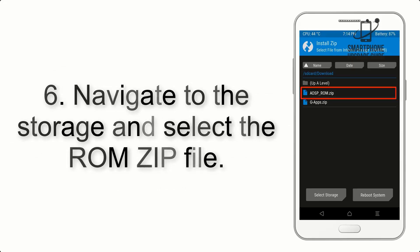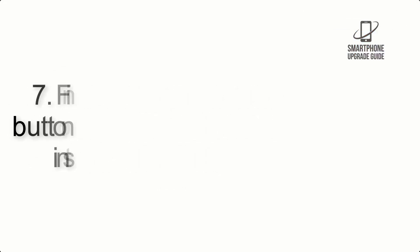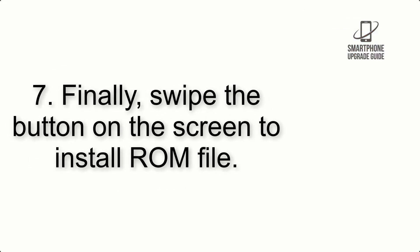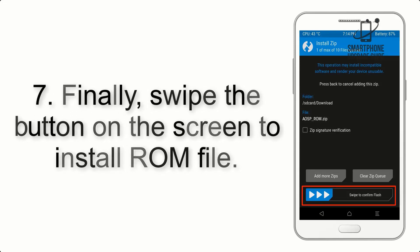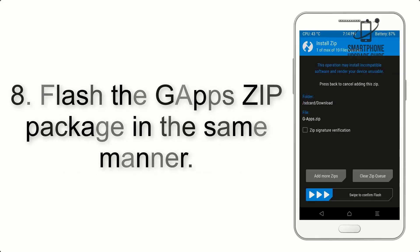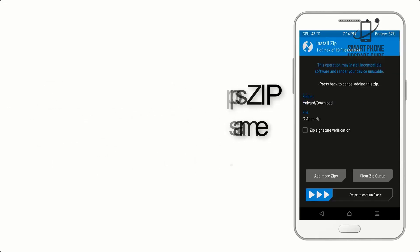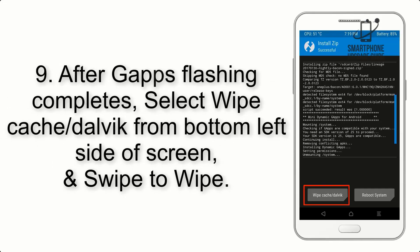Step 5: Go back to the recovery main screen and tap on the Install button. Step 6: Navigate to the storage and select the ROM zip file. Step 7: Swipe the button on the screen to install the ROM file.